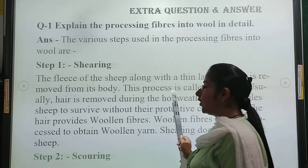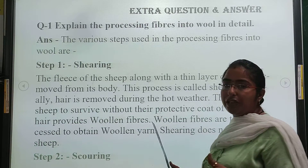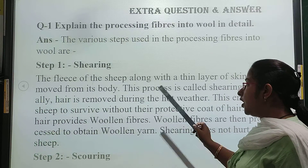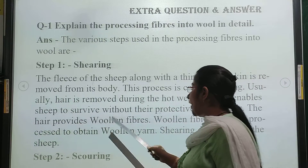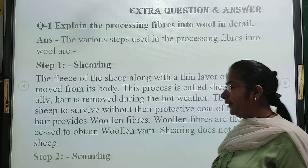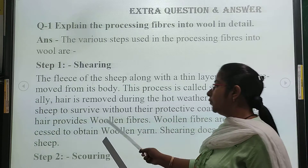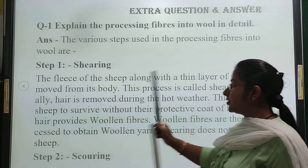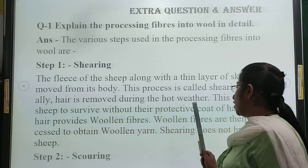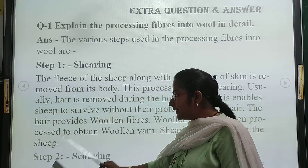Usually the hair is removed during hot weather. If we have cold weather, the sheep would not survive without their protective coat of hair. So that is why we remove the hair in hot weather — the sheep can survive without their protective coat in warm conditions. Their hair provides woolen fibers, which are then processed to obtain woolen yarns. Shearing does not hurt the sheep.